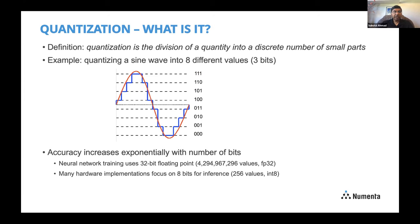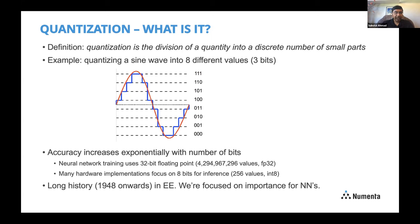The accuracy increases exponentially with the number of bits. Typically with neural network training we use 32-bit floating point, which has something like 4 billion possible values. Many hardware implementations focus on eight bits for inference, so you only have 256 values — an integer representation. As you chop off bits, the problem gets exponentially harder to represent the full precision of values. Quantization has a very long history, at least back to 1948 in electrical engineering, but the main focus here is just quantization for neural networks.